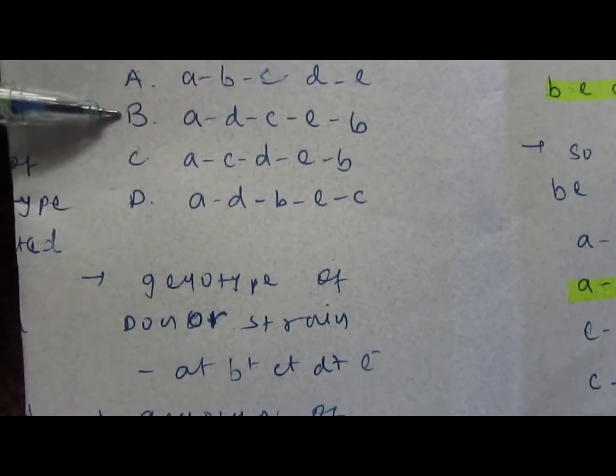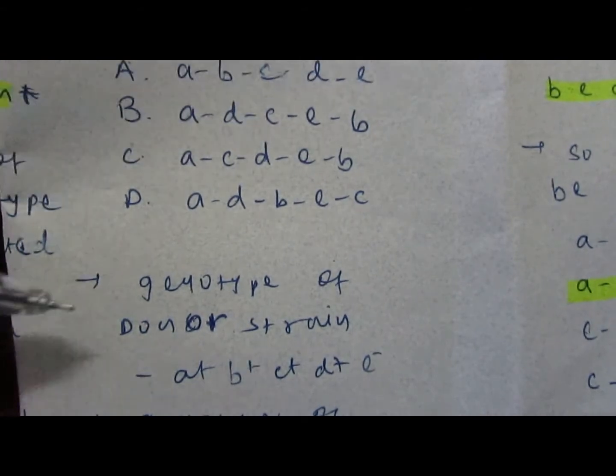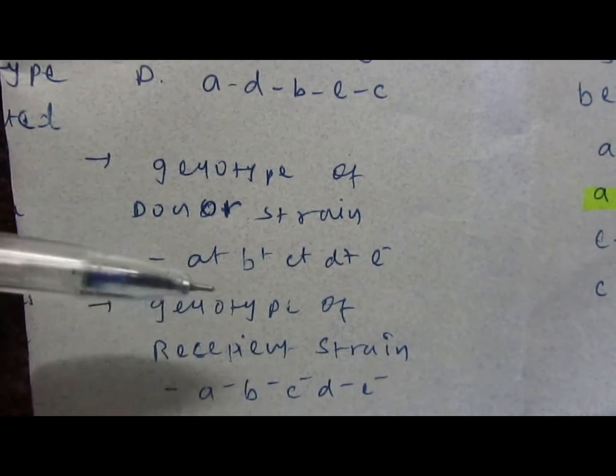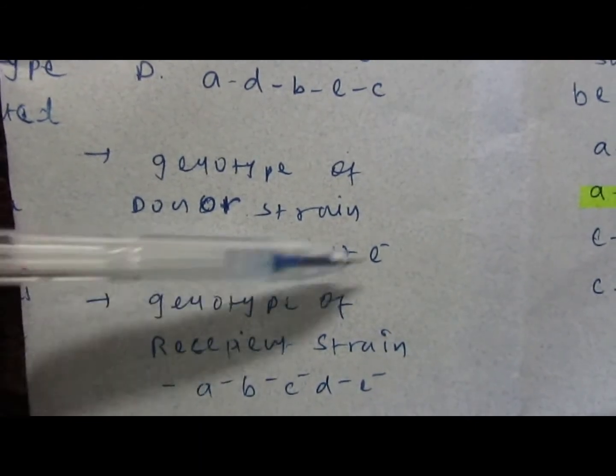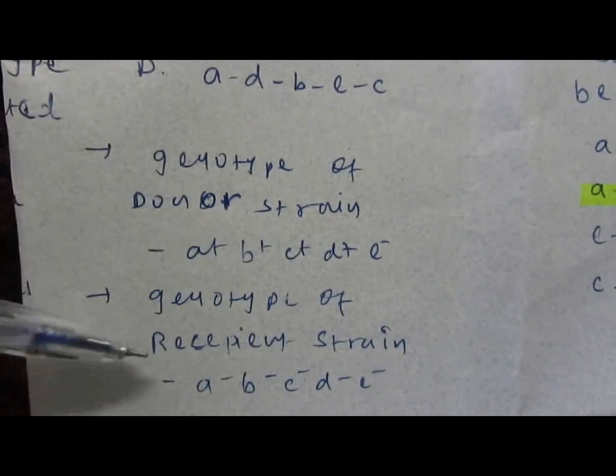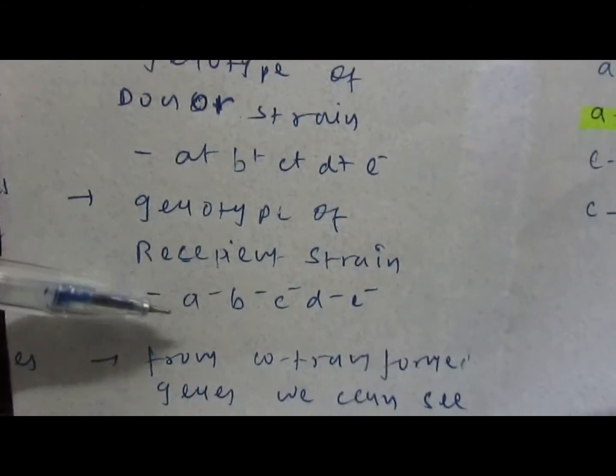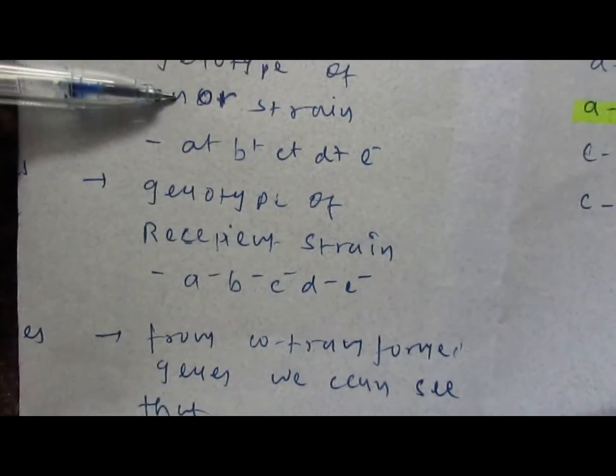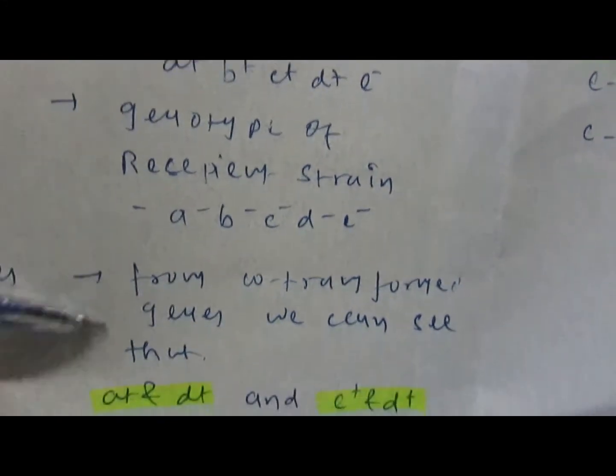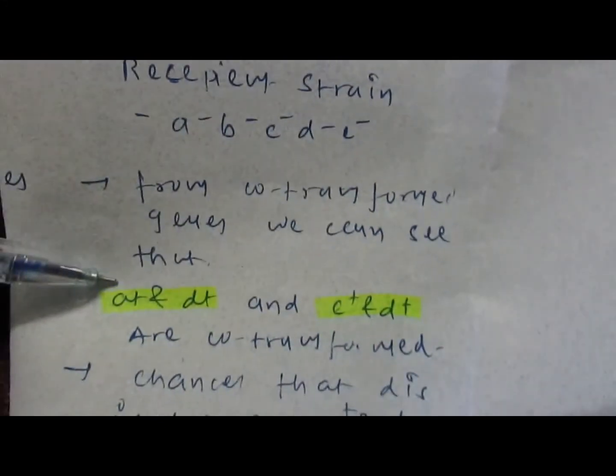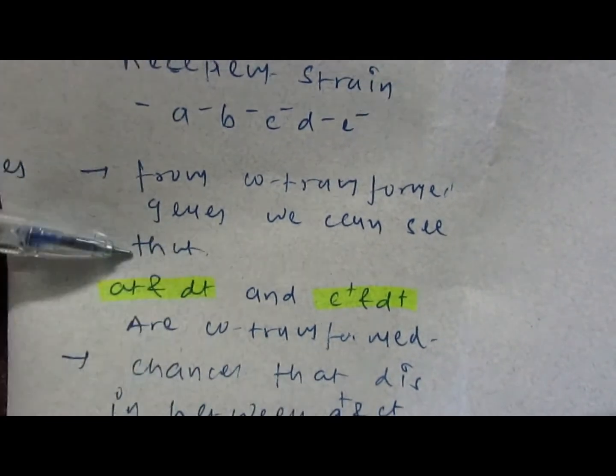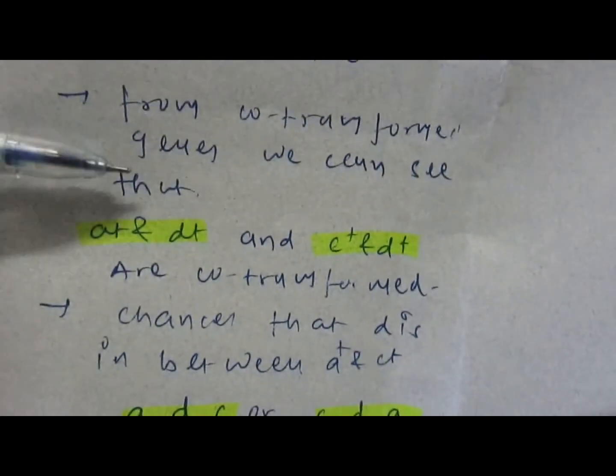Let's start the explanation. The genotype of donor strain is a+ b+ c+ d+ e+ and genotype of recipient bacterial cell is a- b- c- d- e-. From the transformed genes we can see that a+ d+ and c+ d+ are transformed together, meaning they are co-transformed.